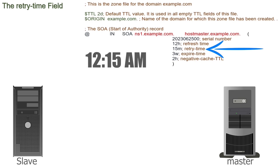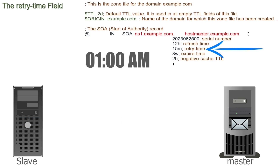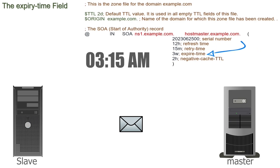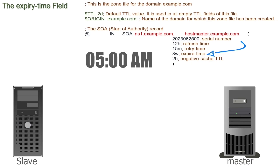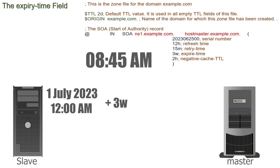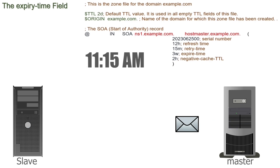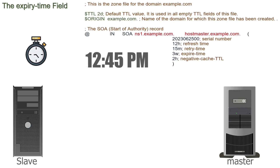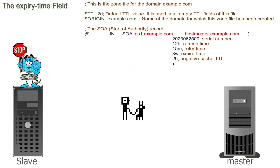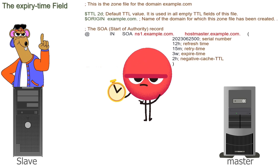The retry time field defines the retry interval. If the slave name server fails to connect with the master, it can try again after this time. In this zone file, this time is configured to 15 minutes, so the slave will retry every 15 minutes if it fails to connect during a refresh cycle. It will keep trying until the expiry time — in this example, 3 weeks. For instance, if it first tries at 12 AM on July 1, 2023, it will keep trying until 12 AM on July 22, 2023. If it succeeds on any try, it resets the refresh and retry times. If it fails to contact the master until expiry is reached, it stops working as a slave name server for the zone and will not resolve queries for the domain.